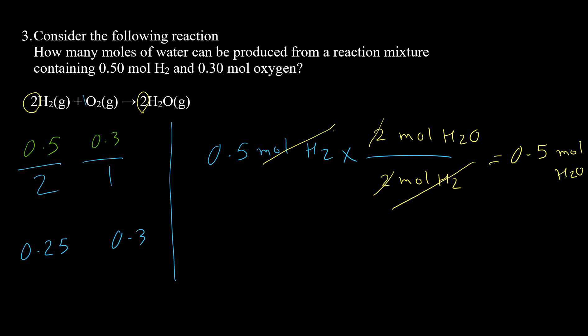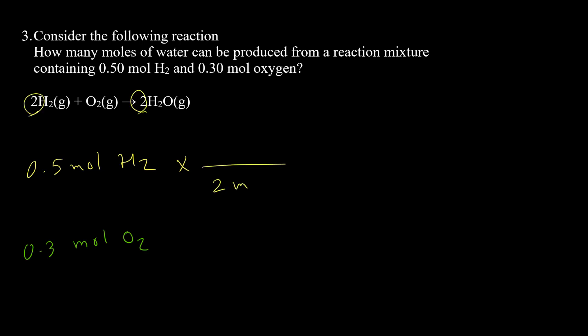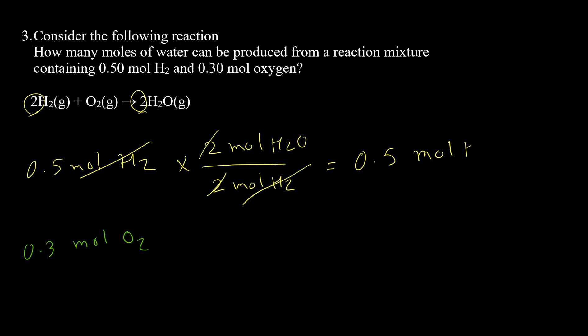For the second method, we perform the calculation two times: once based on the hydrogen value and once based on the oxygen value. The answer with the lower product value is the actual answer. Using hydrogen: 2 mol H₂ produces 2 mol H₂O, so 0.5 mol H₂ gives 0.5 mol water.